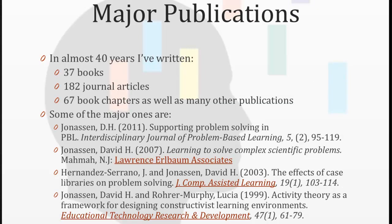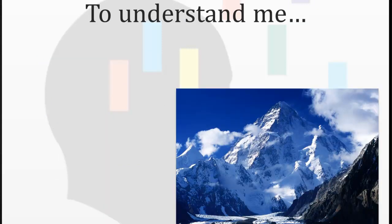As far as major publications go, I believe that if you want to be known in academia, you should publish or perish. Over the 40 years that I've been involved in academia, I've written 37 books, 182 journal articles, 67 book chapters, as well as many other publications. I've also listed some of the major ones below if you want to get to know me a little bit better.